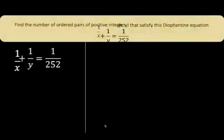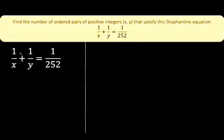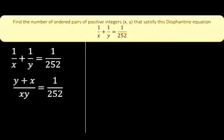Let's begin by first simplifying the given equation. Let's add the fractions at the left to arrive at y plus x over xy equals 1 over 252.